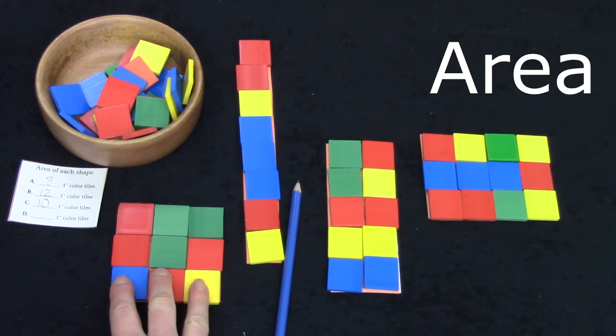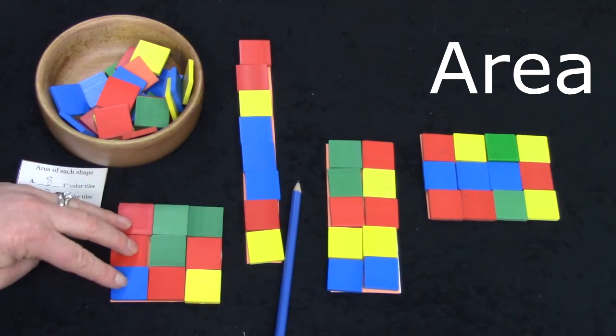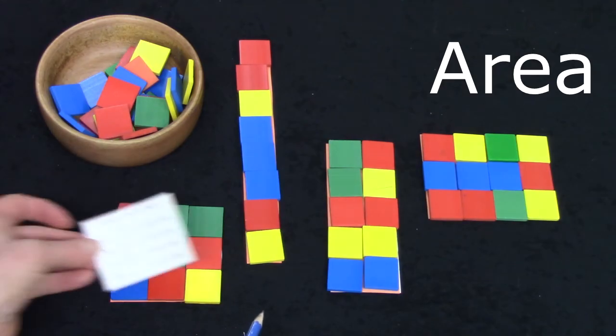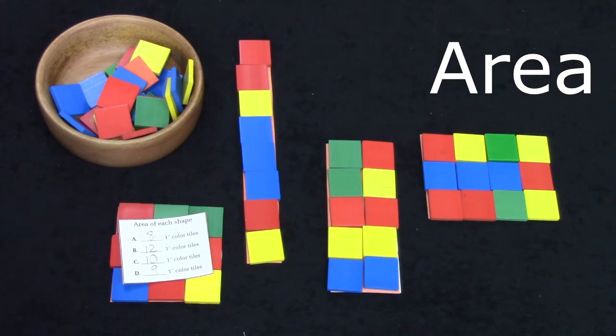Three, six, nine. Oh, I could even do it this way. Three, six, nine. It's a perfect square. I am going to write that on my little sheet. D is nine one inch color tiles.